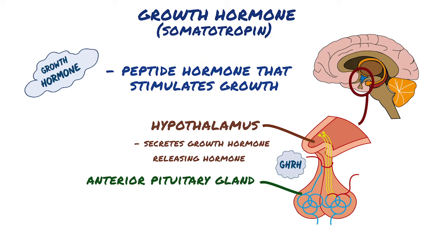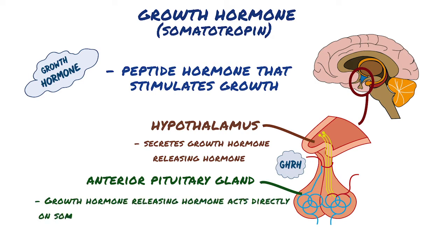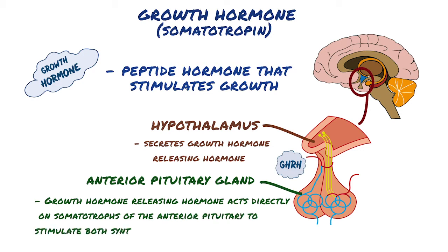In the anterior pituitary, there are many different types of cells, each responsible for producing a type of hormone. Growth hormone-releasing hormone acts directly on somatotrophs of the anterior pituitary to stimulate both synthesis and secretion of growth hormone.